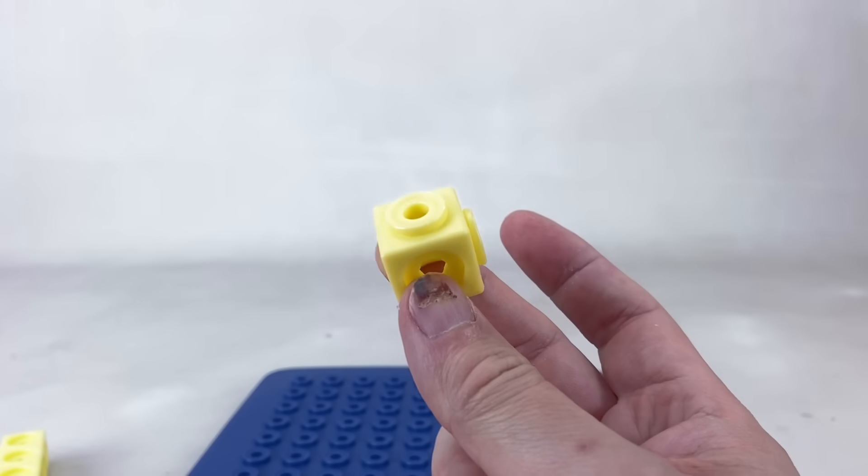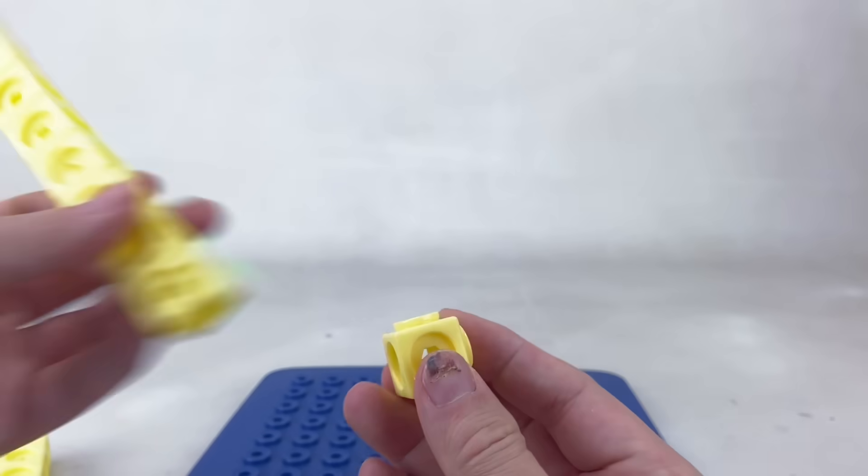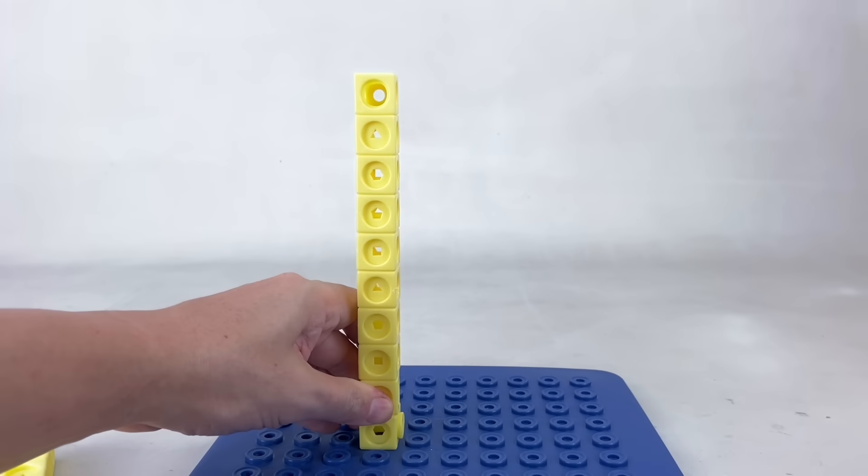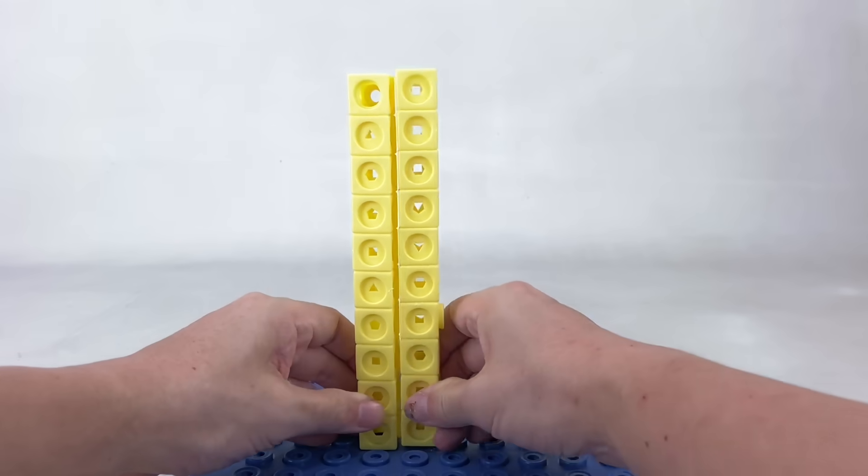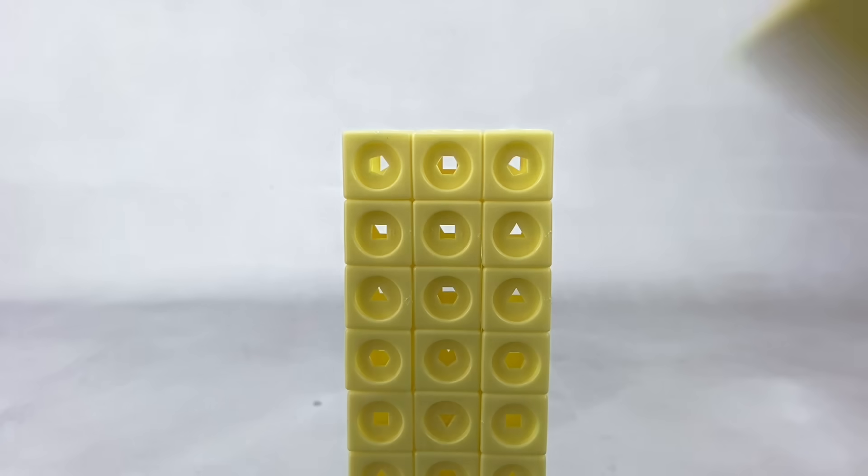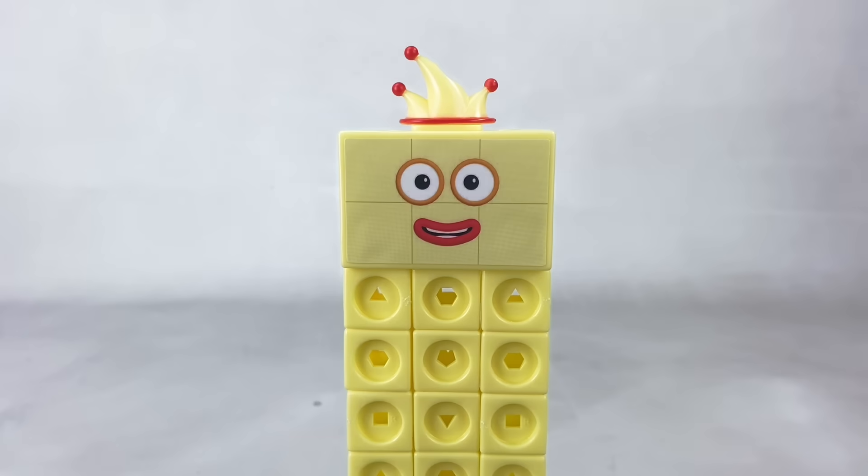For our next hero, we'll need two of these special connectors that have two studs! These allow us to make the bigger number blocks more durable! We'll also use a total of 10, 20, 30 light yellow blocks! We'll add her face, jester hat, and numberling!